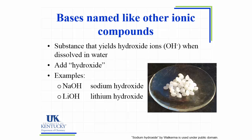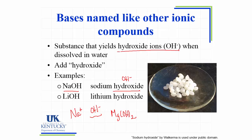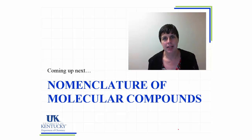Bases are easy to name because we name them like any other ionic compound. A base is a substance that yields hydroxide ions when dissolved in water. The most common example is NaOH, or sodium hydroxide. Hydroxide is a polyatomic ion (OH⁻, charge −1), so we don't change its ending. We can have lithium hydroxide or magnesium hydroxide — using parentheses for the polyatomic ion when needed. In the next module we'll look at how we name molecular compounds.